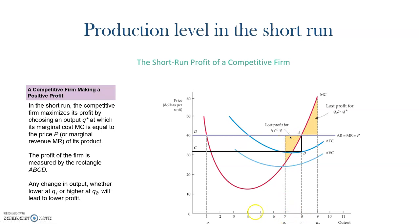But what happens if the firm decides to produce 1 unit more and produce 9 units instead of 8? Then the marginal cost is greater than the marginal revenue. So we are again losing profits. This last unit provides more additional cost than additional revenues, so the marginal benefits of this last unit are negative. This is represented again by this orange or yellow area.